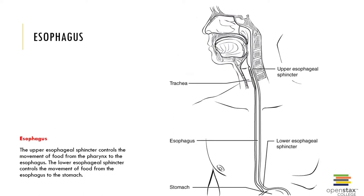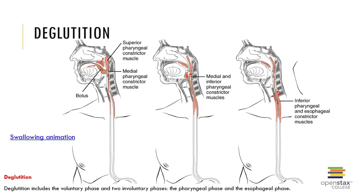There's a term you're going to see used in some of the literature — deglutition. Deglutition is the movement of food from the oral cavity into the pharynx and then into the esophagus. Basically, there are three phases of deglutition, which is more commonly known as swallowing.